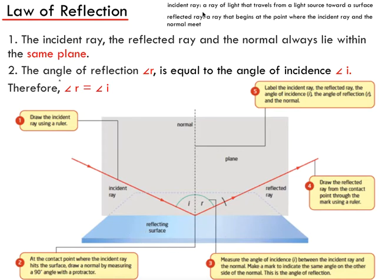A reflected ray is a ray that begins at the point where the incident ray and the normal meet. A normal is an invisible dotted line that's perpendicular to the reflecting surface. So once this incident ray hits the normal, you've got what's called a reflected ray continuing in this direction.